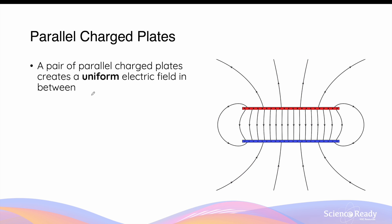The third type of electric field discussed in this video is one produced by a pair of parallel charged plates, which produces a uniform electric field — a field with constant magnitude. A positively charged metal plate at the top and a negatively charged metal plate at the bottom: the field lines go away from the positive plate and towards the negative plate. The field lines between the two plates are straight, parallel, and equally distant from one another.